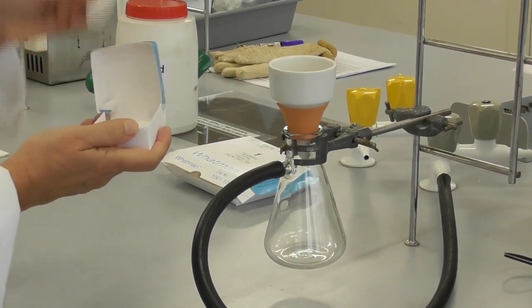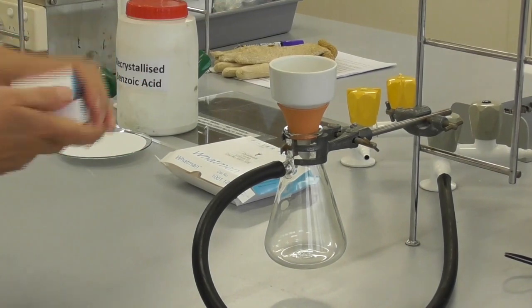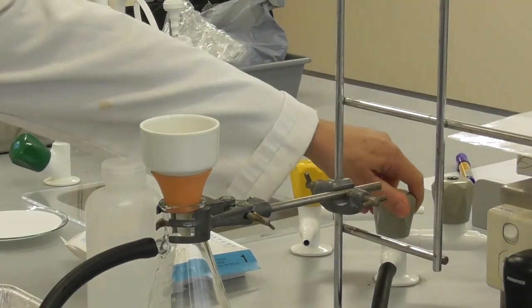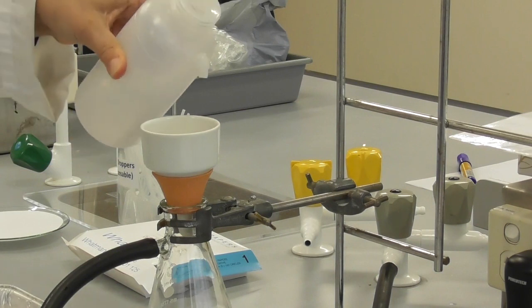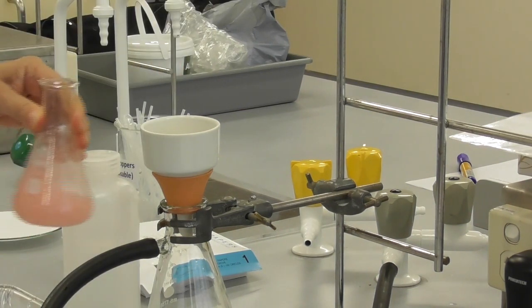We insert the filter paper into the buchner funnel. When we are ready we turn on the vacuum and wet the filter paper by adding a little bit of distilled water into the buchner funnel.